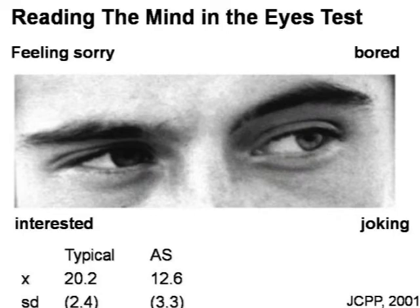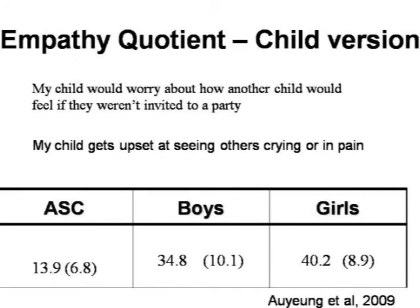We can also use questionnaires to assess empathy. This is the Empathy Quotient — the child version — where the parent fills it in about their child. The parent simply says whether they agree or disagree with each statement as a description of their child. Children on the autistic spectrum score lower than typical boys and girls on this test of empathy. We also notice that typical girls score slightly higher than typical boys in terms of parent-reported empathy.